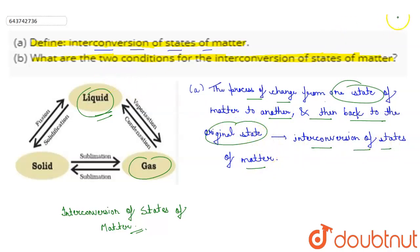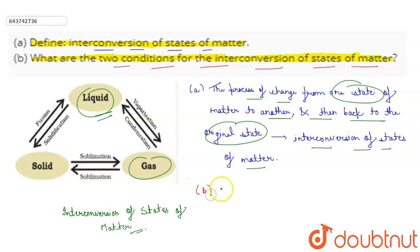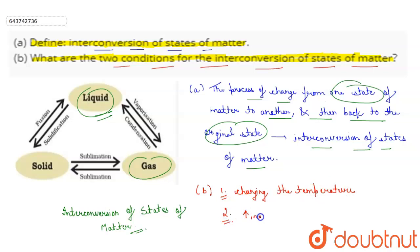Now we will see what are the two conditions for the interconversion of states of matter. The first condition is changing the temperature, and the second condition is increasing or decreasing the pressure.